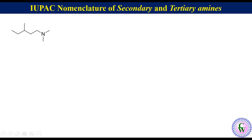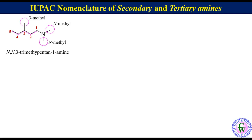Another example: here the parent chain has a 5-carbon chain called pentane. Numbering will be 1, 2, 3, 4, and 5. There are 3 methyl substituents: 2 on the nitrogen and 1 at C3. Nitrogen is attached to C1 of the parent chain. So the IUPAC name will be N,N,3-trimethylpentan-1-amine.